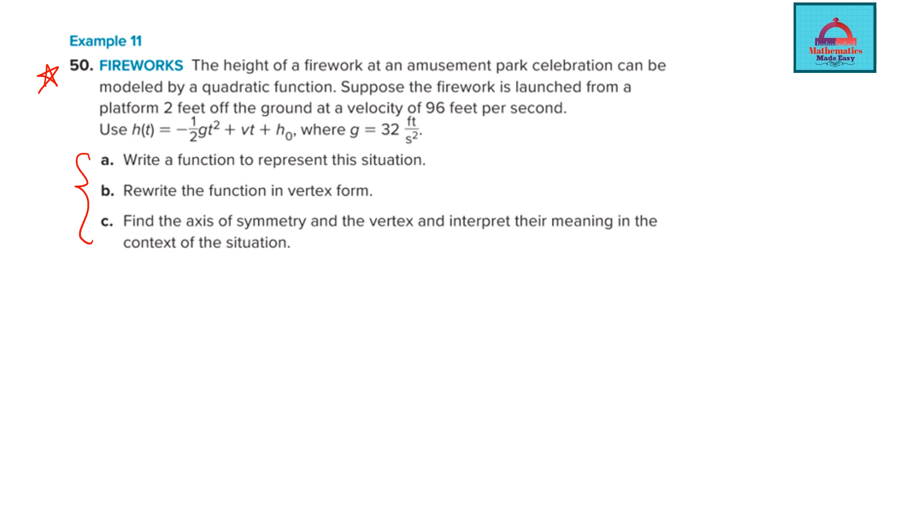So the height of a firework at an amusement park celebration can be modeled by a quadratic function. Suppose the firework is launched by a platform, feet of the ground and a velocity of 96 feet per second. Use h(t). So this formula is given to you. We are going to use this formula for solving the question in part a.